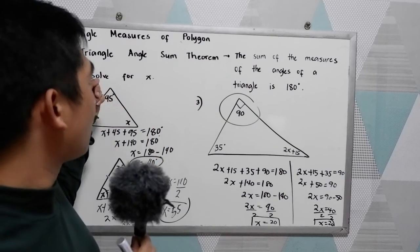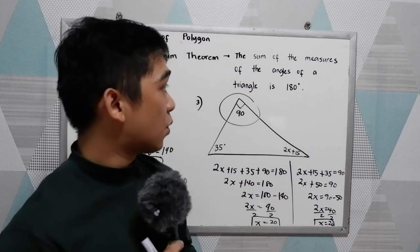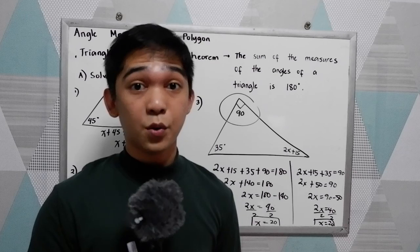So that is the triangle angle sum theorem. The sum total of our angles in a triangle is equal to 180.